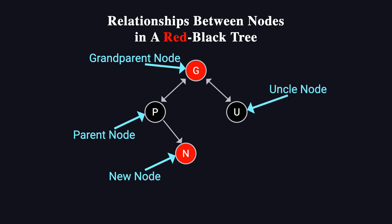And U, uncle, is the sibling of P, which can be either a regular node or a nil node. In the following explanation, to keep things simple, we'll focus mainly on N, P, G, and U, leaving out other nil nodes and non-essential subtrees.